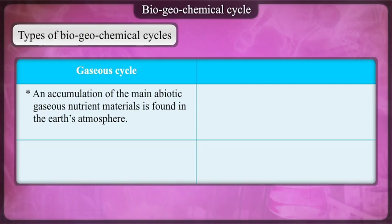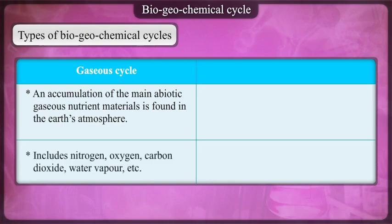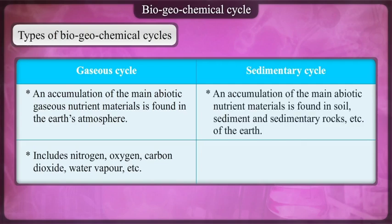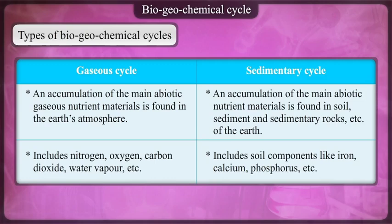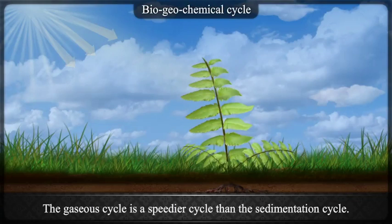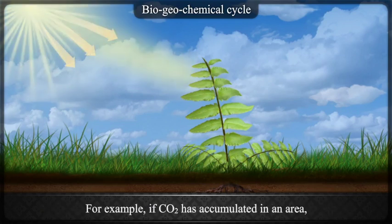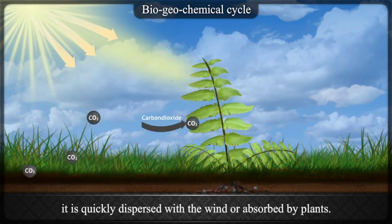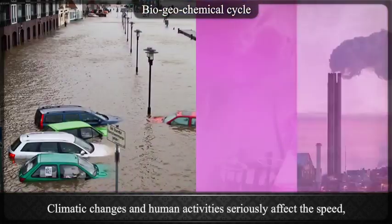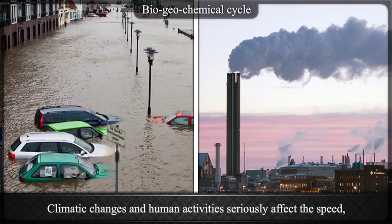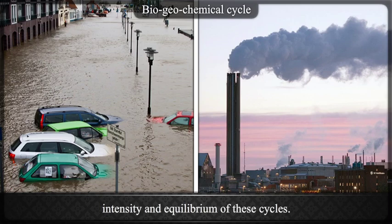An accumulation of the main abiotic gaseous nutrient materials is found in the Earth's atmosphere — includes nitrogen, oxygen, carbon dioxide, water vapour, etc. Sedimentary cycle: includes soil components like iron, calcium, phosphorus, etc. The gaseous cycle is a speedier cycle than the sedimentary cycle. If CO₂ has accumulated in an area, it is quickly dispersed with the wind or absorbed by plants. Climatic conditions and human activities seriously affect the speed, intensity and equilibrium of these cycles.